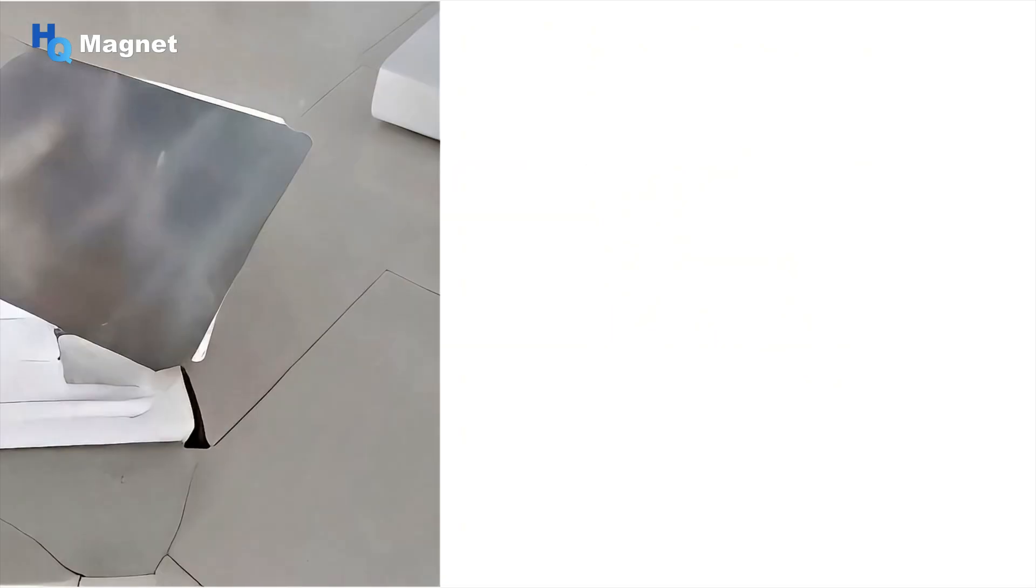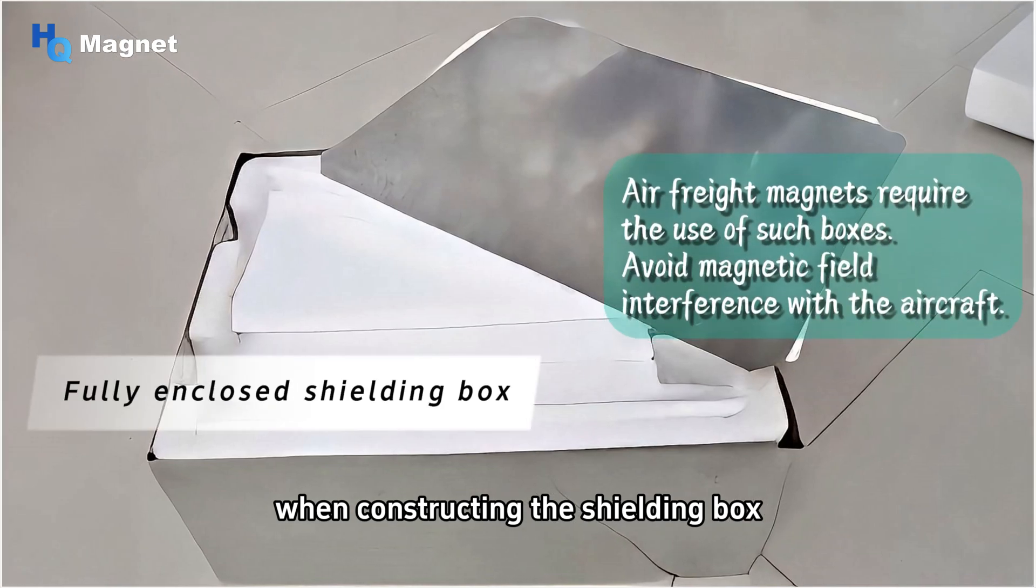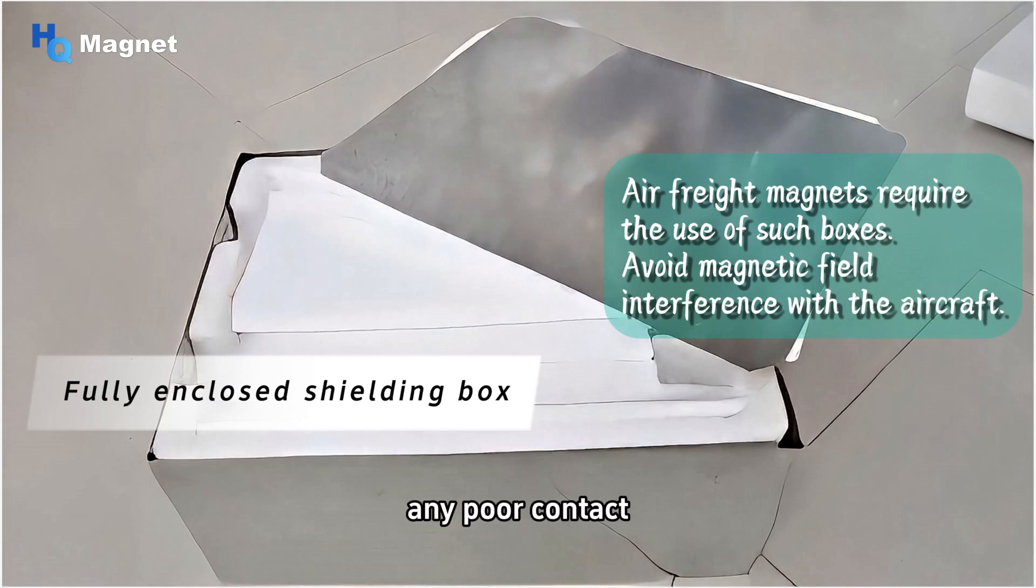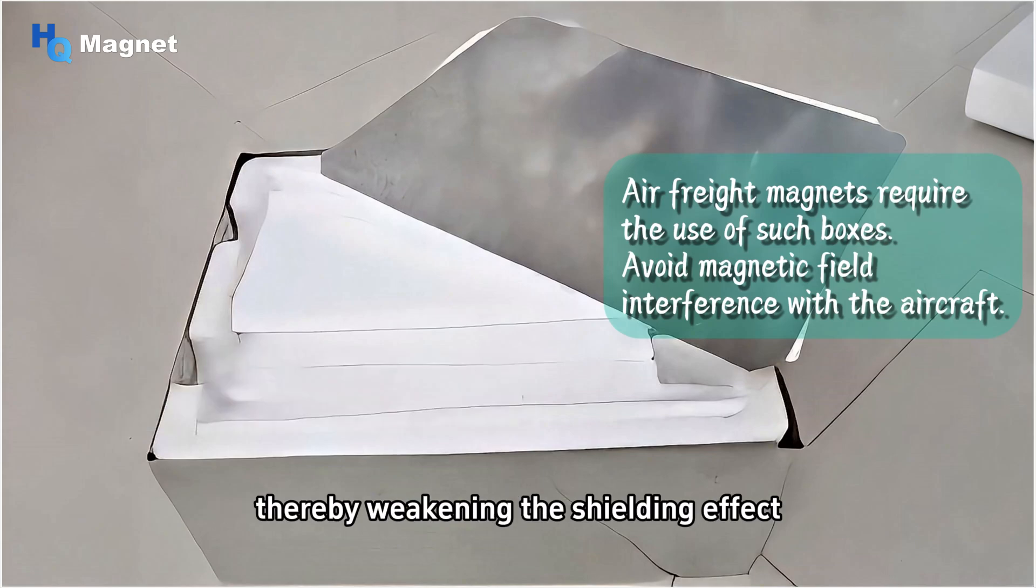When constructing the shielding box, the seams where iron plates are spliced must ensure good contact. Any poor contact situation may increase the magnetic resistance, thereby weakening the shielding effect. Therefore, the contact area at the seams should be increased as much as possible.